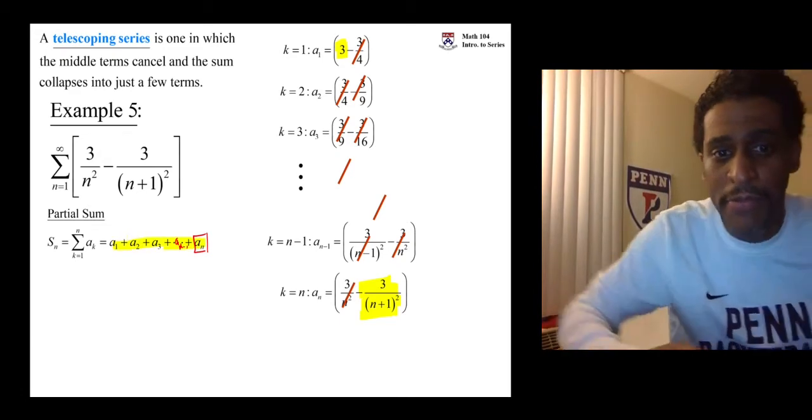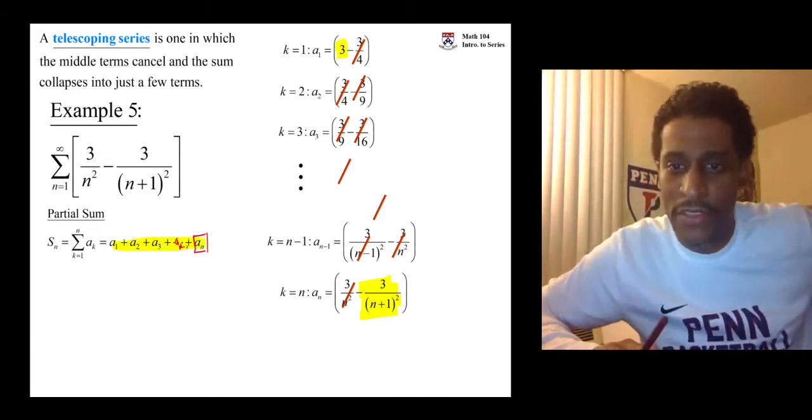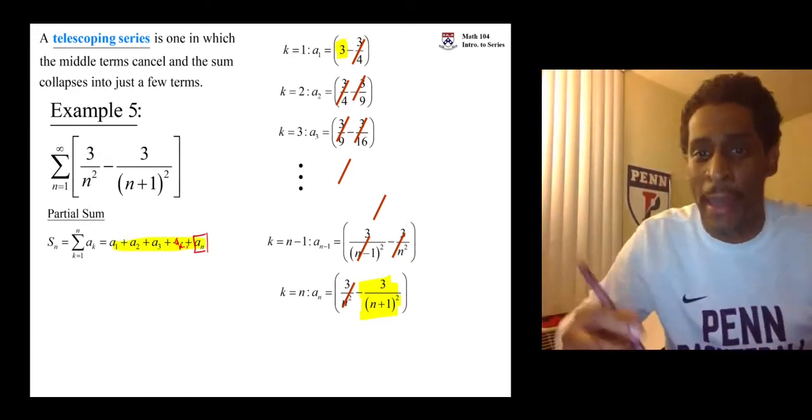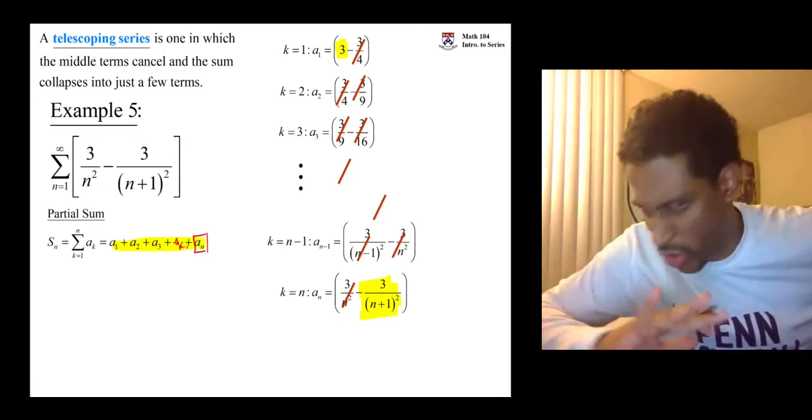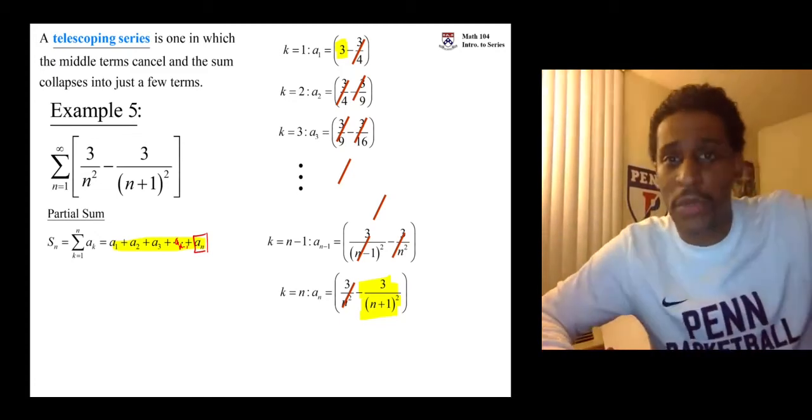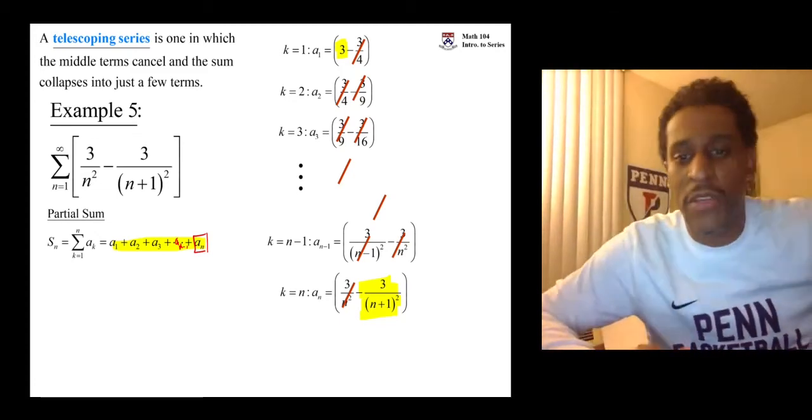We're talking about adding up the first n terms. And we have this collapsing happening. The middle terms are gone. One term surviving in the beginning. One term surviving at the end.